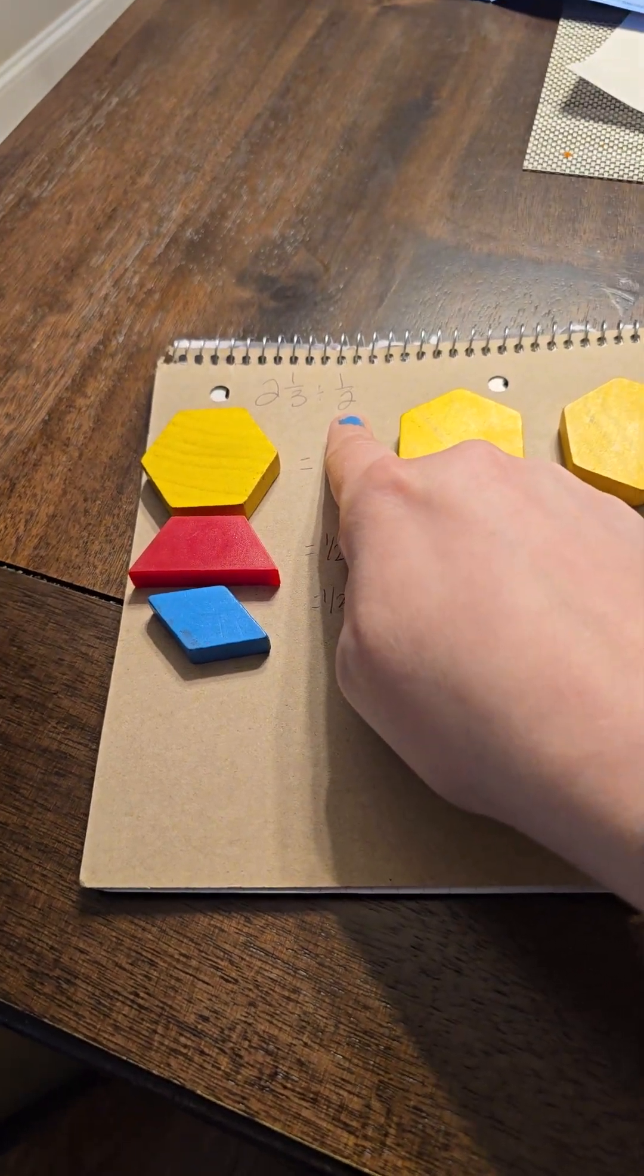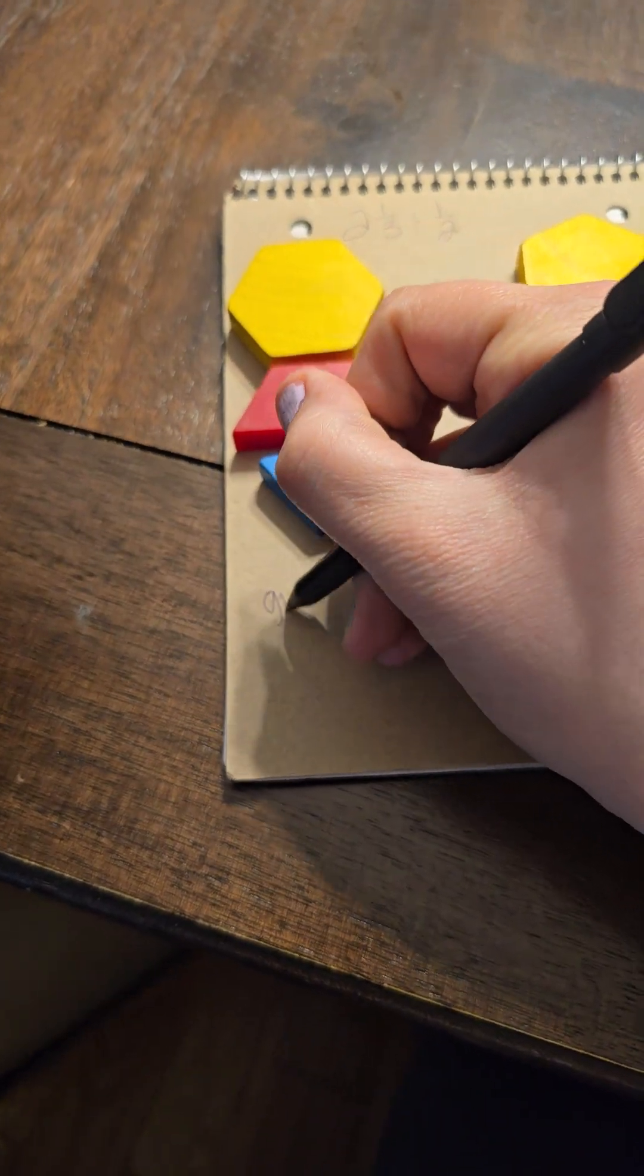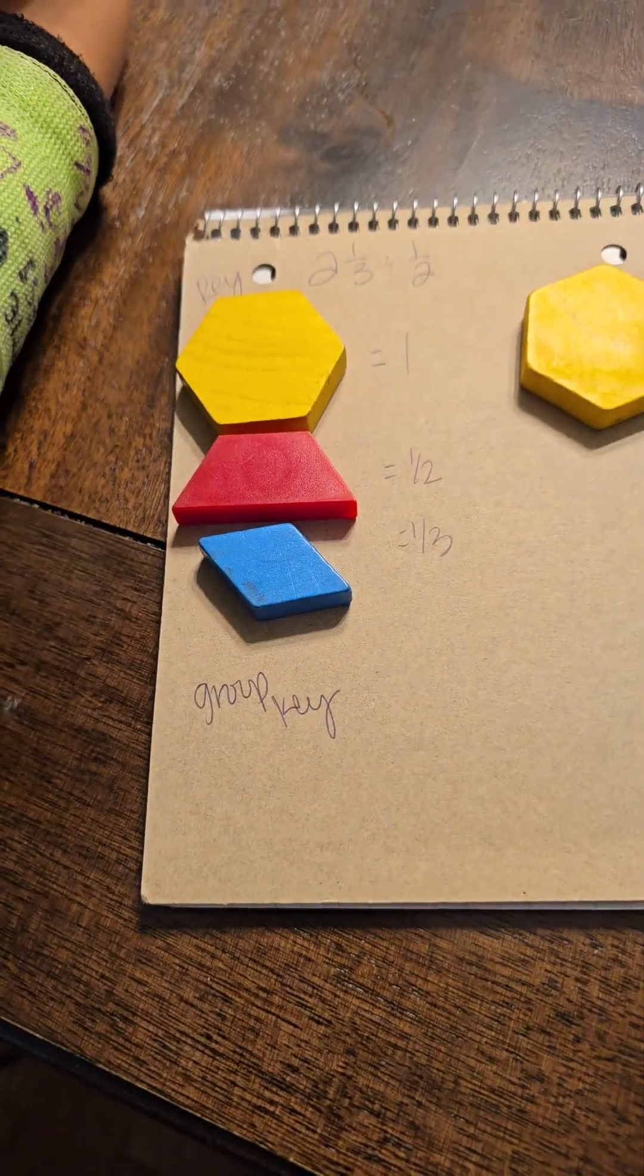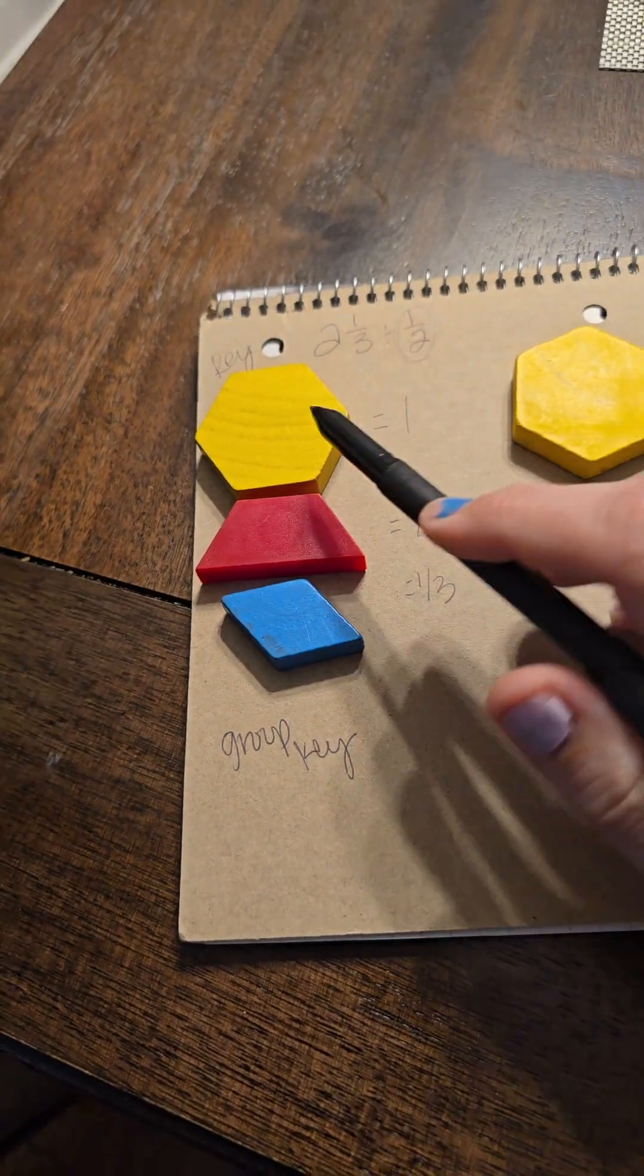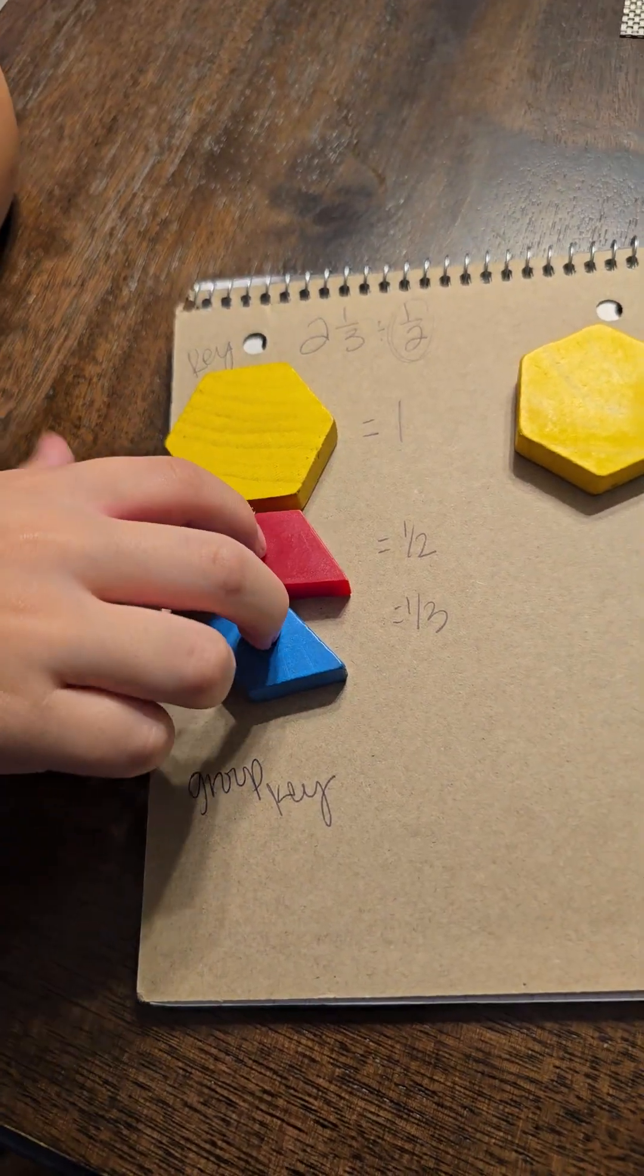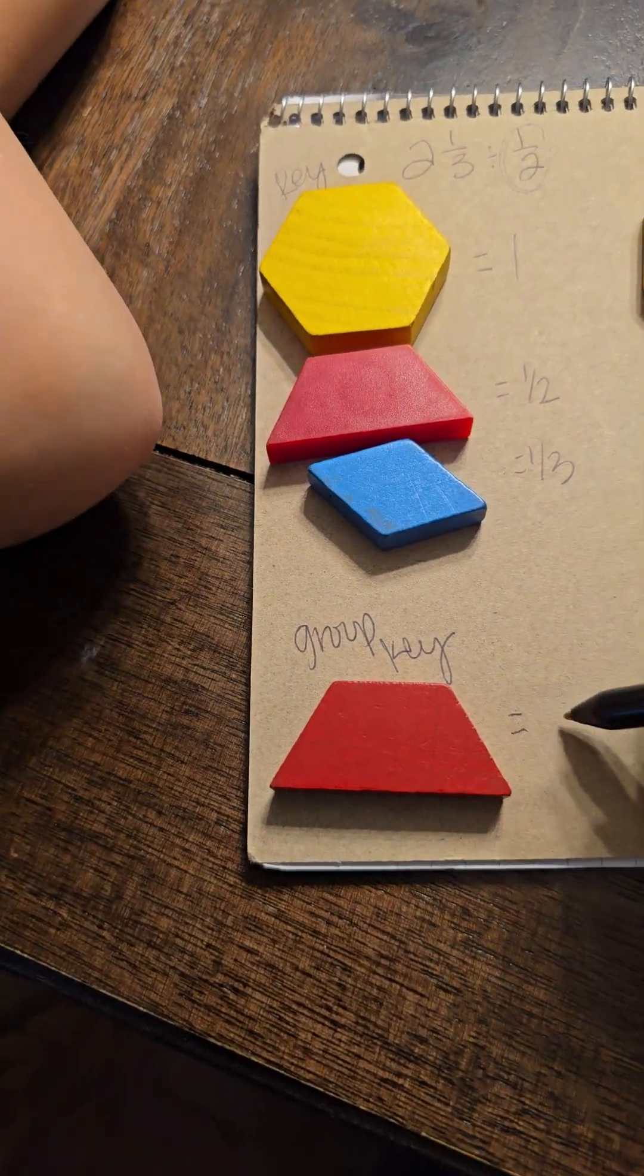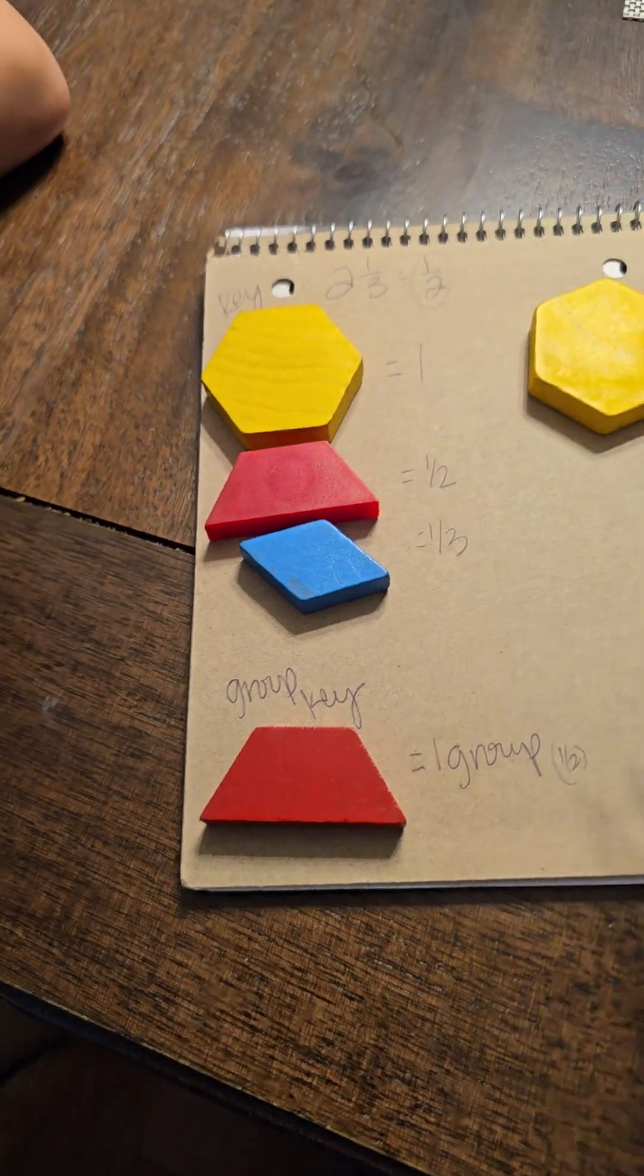We're looking for halves down here. So let's make our group key. Here's the key to our solution. We're looking for half. What is half of the whole over here? Which shape is half? Which one is half of the hexagon? The trapezoid. So the trapezoid is going to be our group. It's going to be our one group. And it equals the half, right?